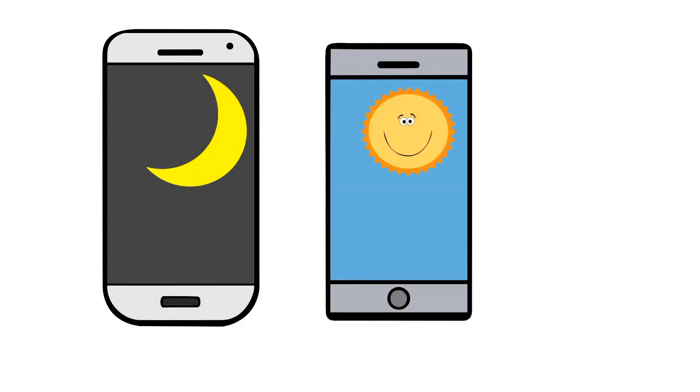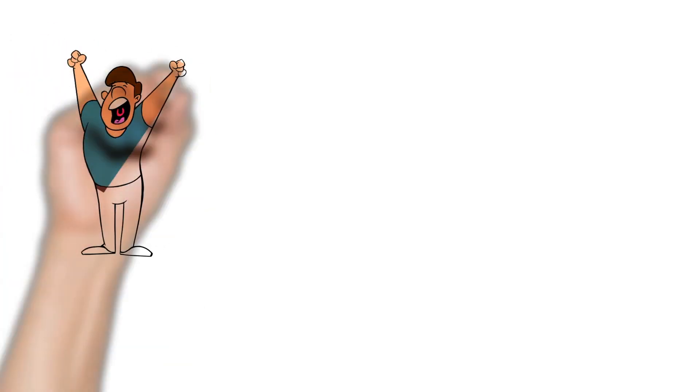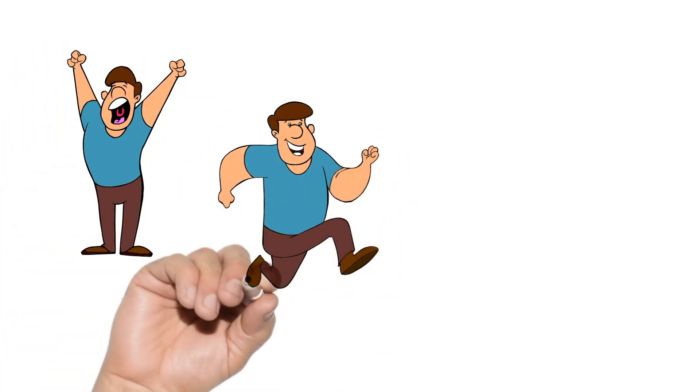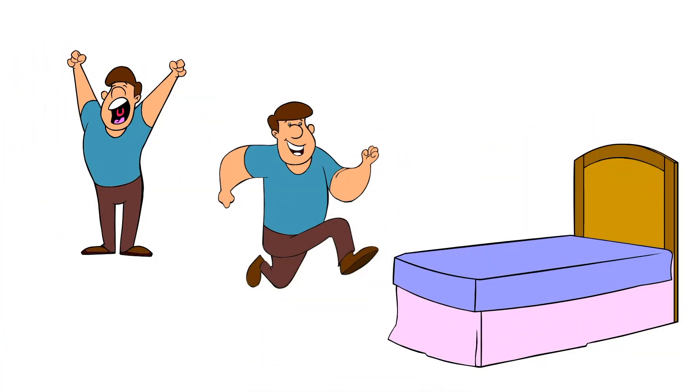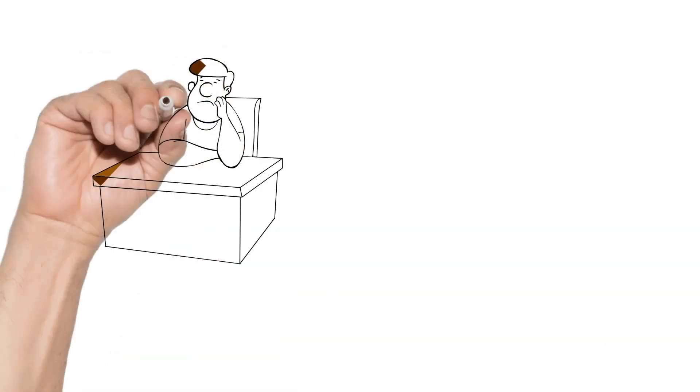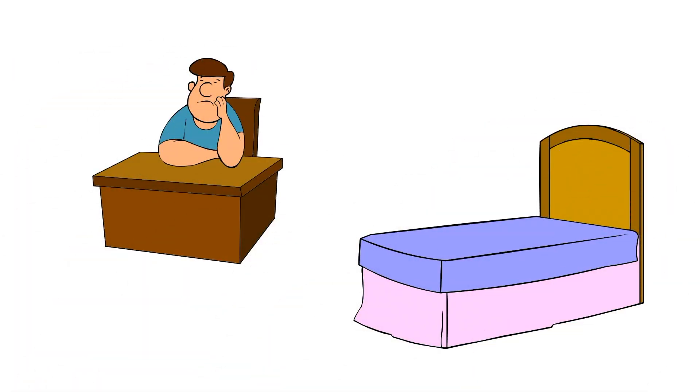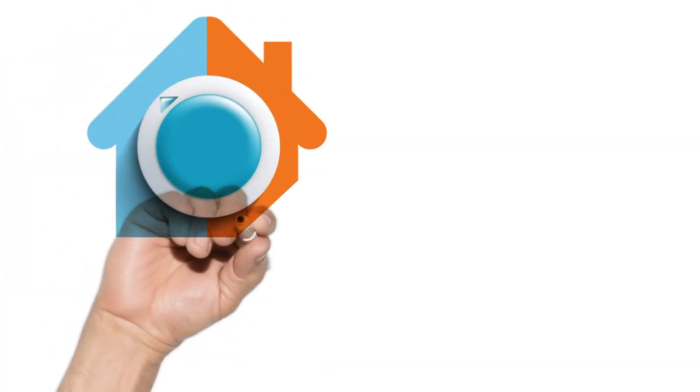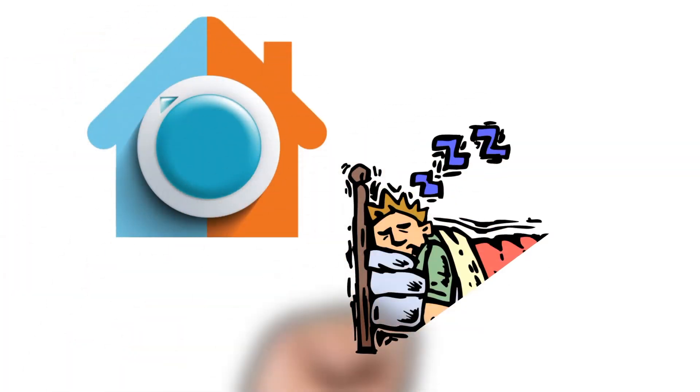When you feel sleepy, go straight to bed. If you push through, you have to wait for the next circadian rhythm to feel sleepy again, therefore less exposure to deep sleep. Decrease room temperature - hot environments can make you have interrupted sleep.